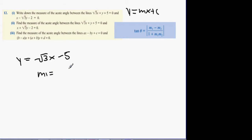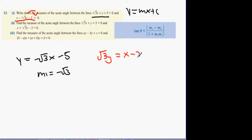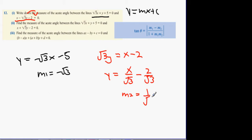The slope of the first line (black line) is m1 = minus root 3. For the red line, we rearrange: root 3y = x minus 2, then divide by root 3 to get y = x over root 3 minus 2 over root 3. So the slope m2 is 1 over root 3 — whatever number comes in front of the x.